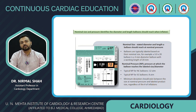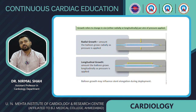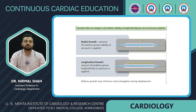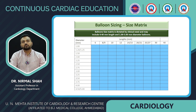Nominal pressure is the pressure at which the balloon reaches its labeled diameter. Typically, nominal pressure for non-compliant balloons is 12 atmospheres and for semi-compliant balloons it is 8 atmospheres. Minimum deviation should exist between size at nominal pressure and labeled product size regardless of number of inflations. Growth refers to the change in size — either radially or longitudinally — per atmosphere of pressure applied, and balloon growth may influence stent elongation during deployment.